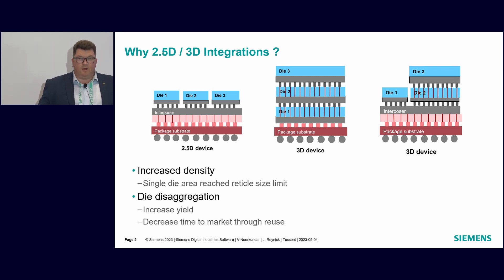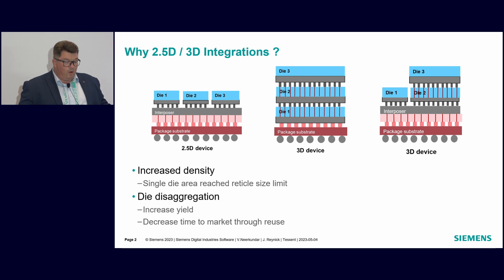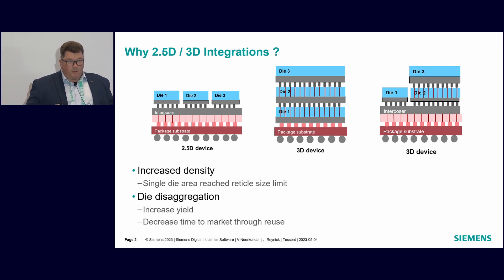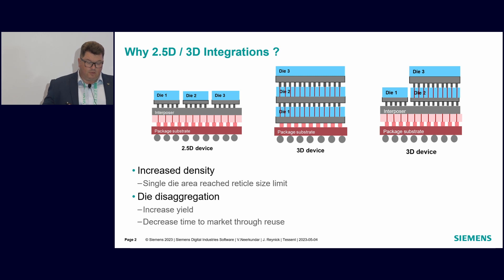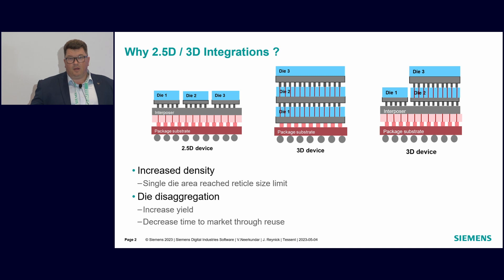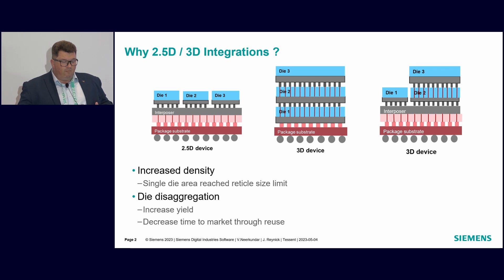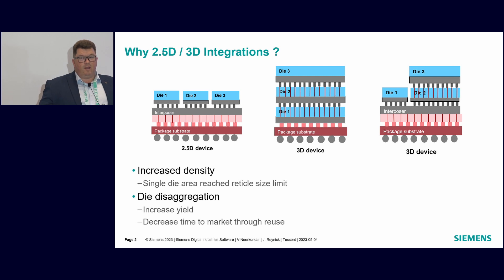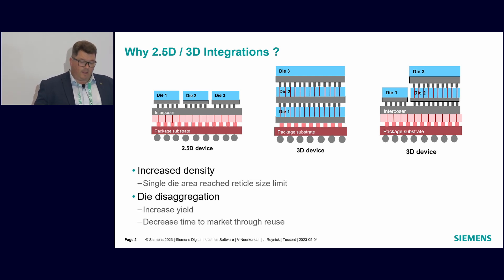Why 2.5D? Why 3D? What are they, and why is it the hot topic at the moment? What we're seeing in the industry, to continue that strive to meet Moore's law, is the need to go to a multi-die strategy. Many designs out there today are reaching the point of being reticle size, so the only way we can continue to increase capacity is to put more than one die in a package.